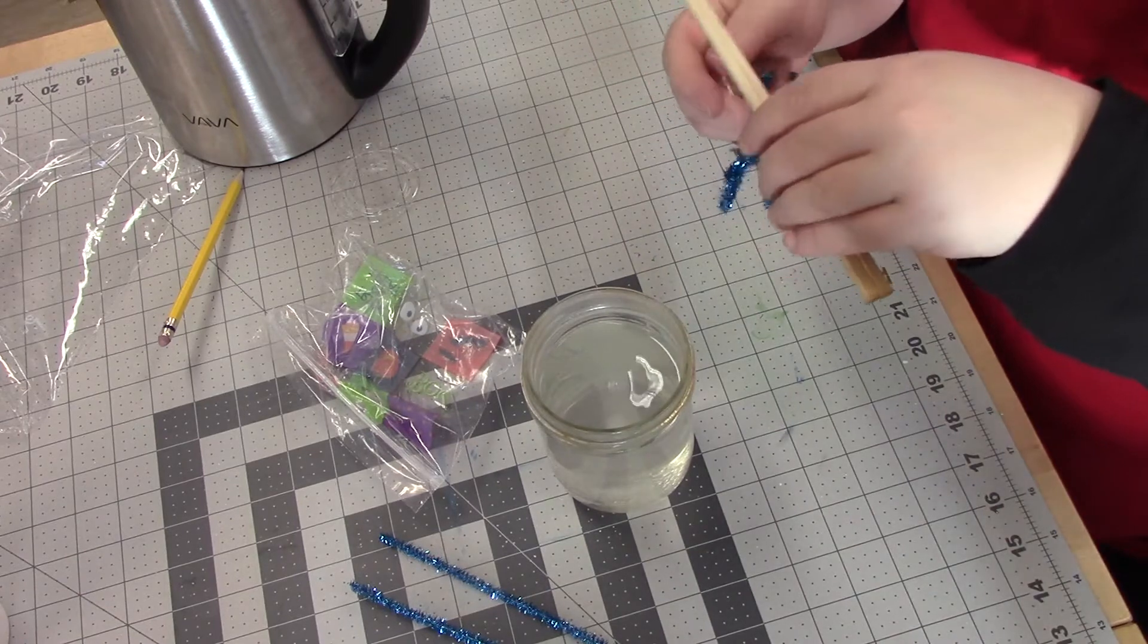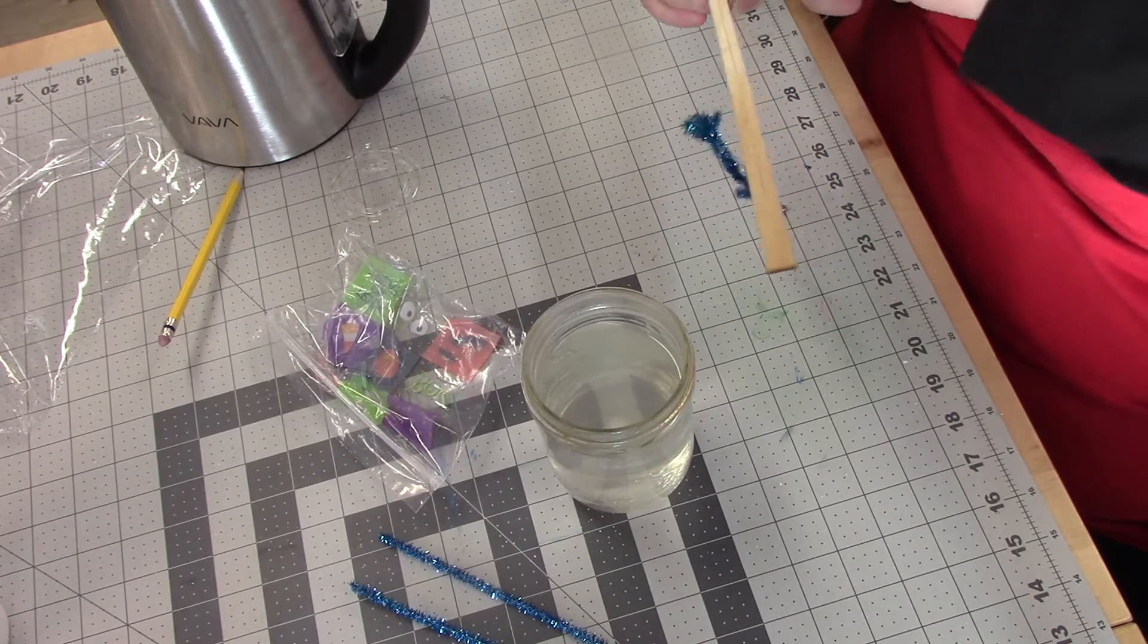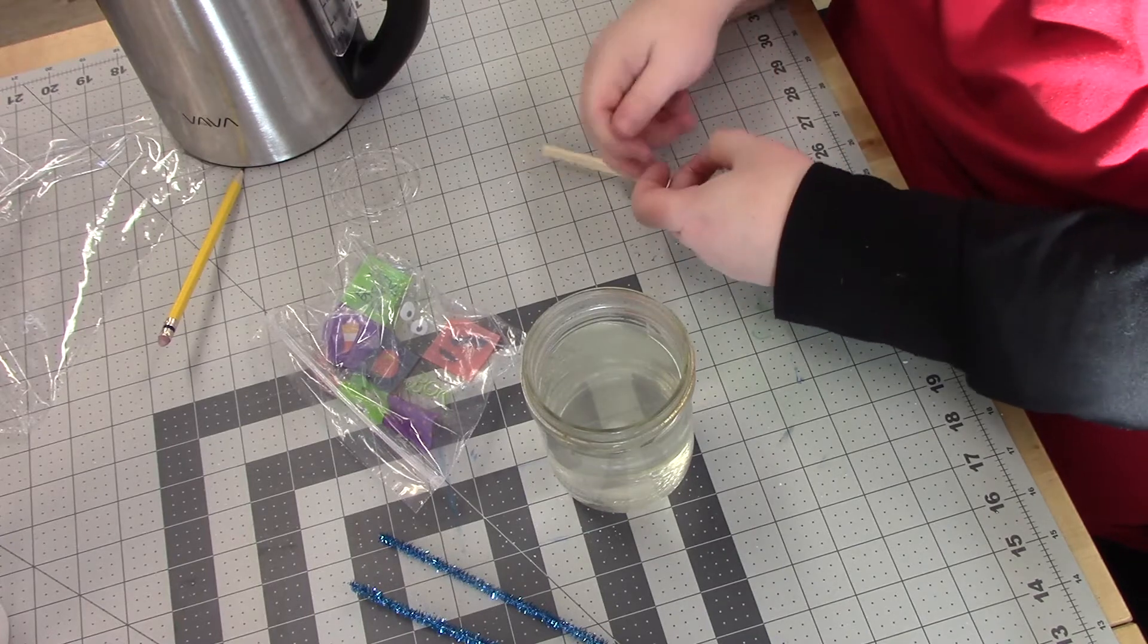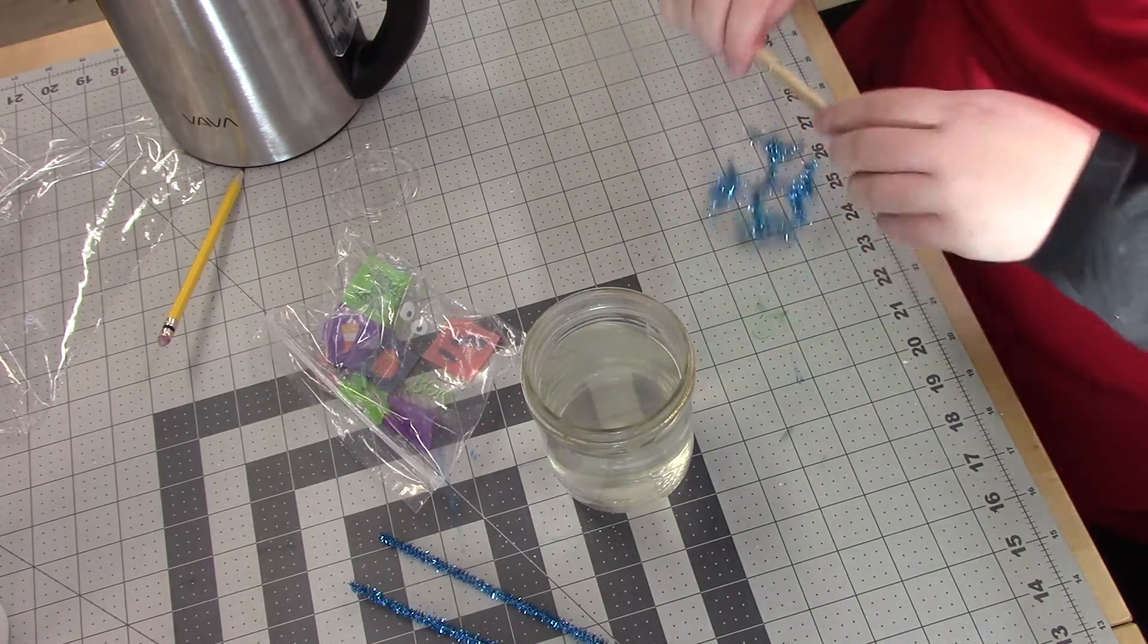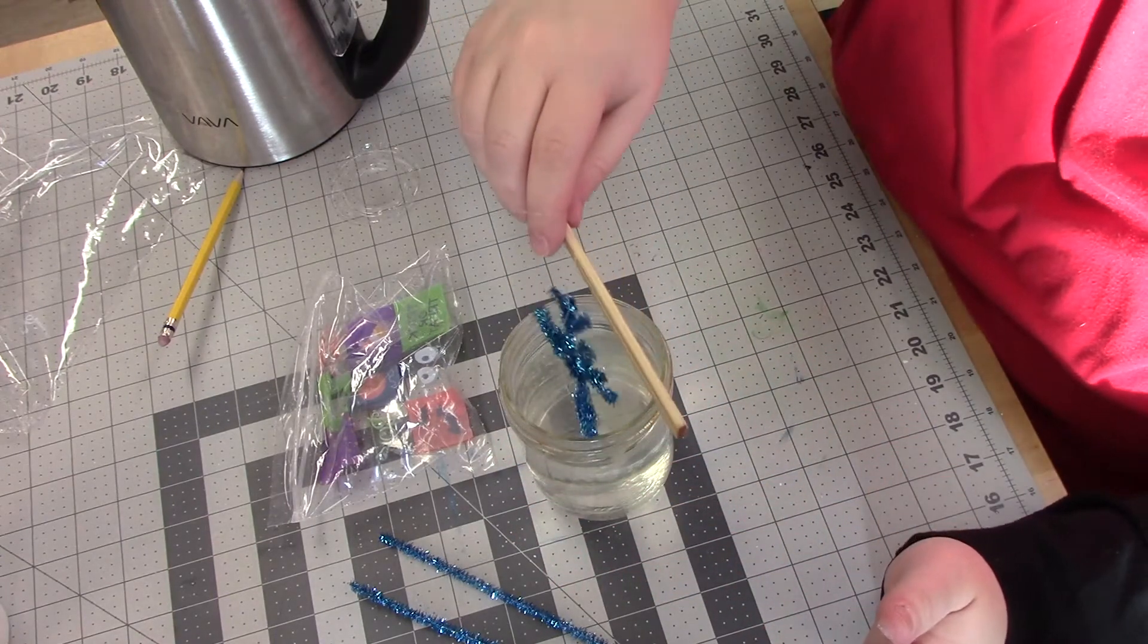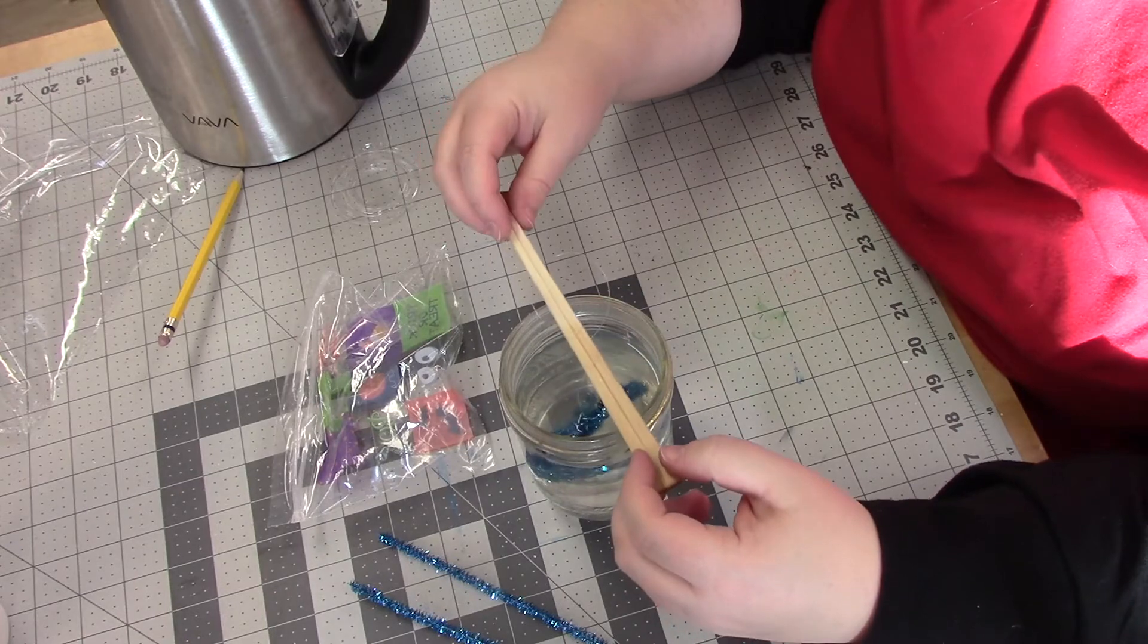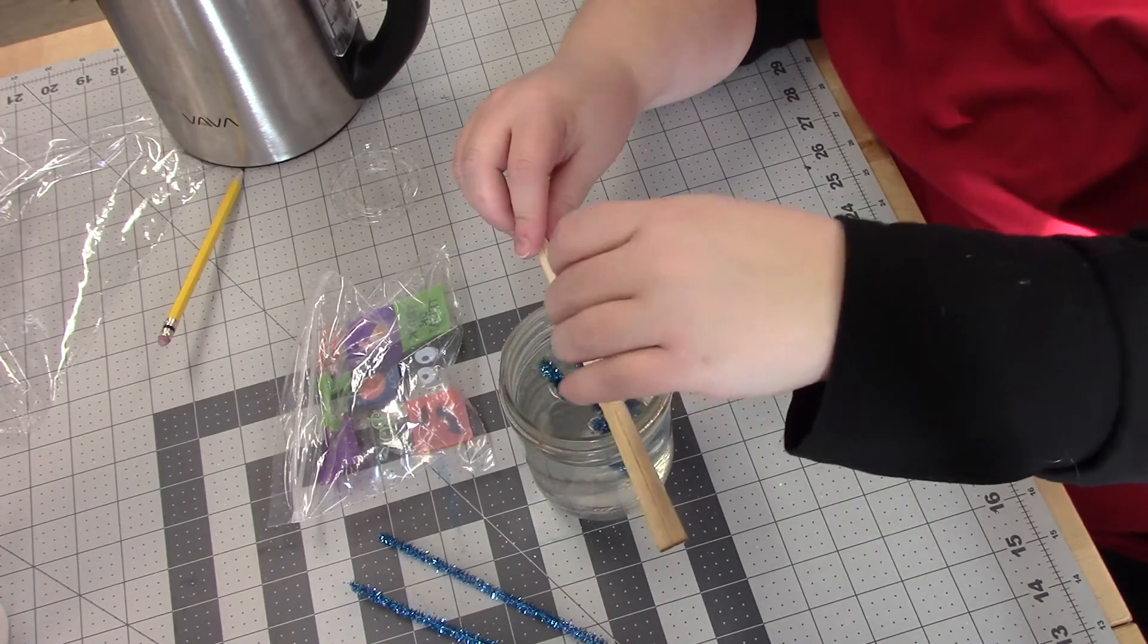That should do it, so I'm going to dangle my snowflake. And it looks like my knot came undone a little bit, so I'm just going to retie it. Tie it a little better. Okay, so you're going to just put your snowflake into your water. Let it sink a little bit. Now when I retied it, the string got a little longer and it's not dangling very well, so I'm going to pull this up here.